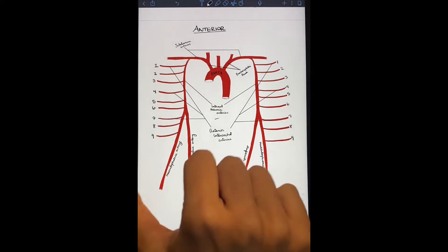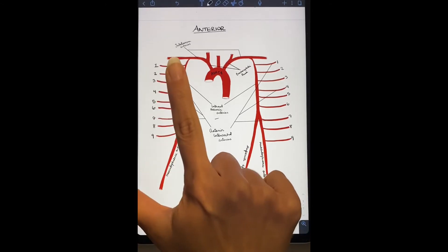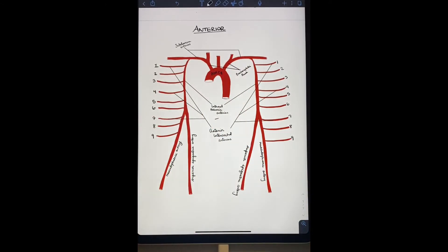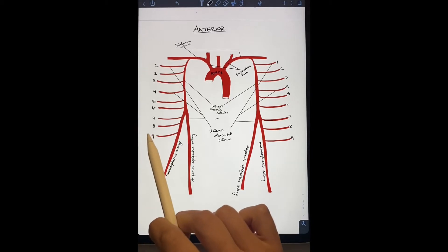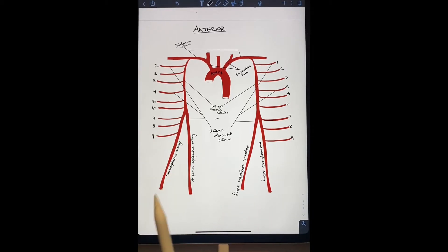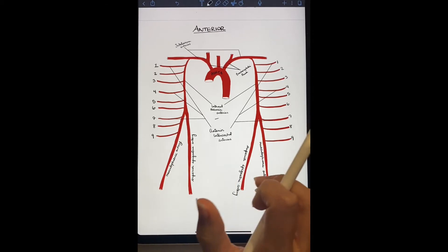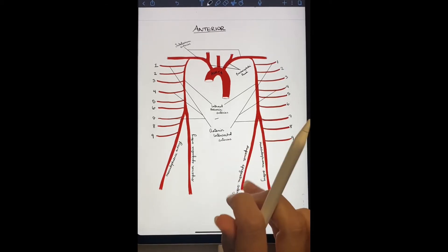Intercostal arteries supply intercostal muscles, the overlying skin, and parietal pleura. These arteries anastomose laterally with posterior intercostal arteries. Intercostal arteries and veins lie between the internal and innermost intercostal muscle layers.